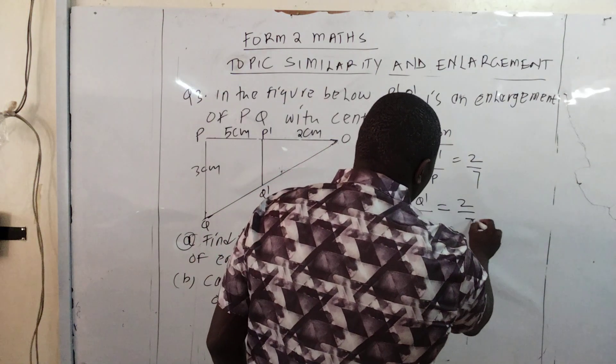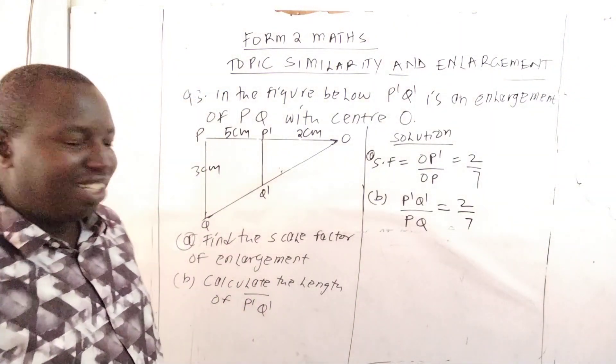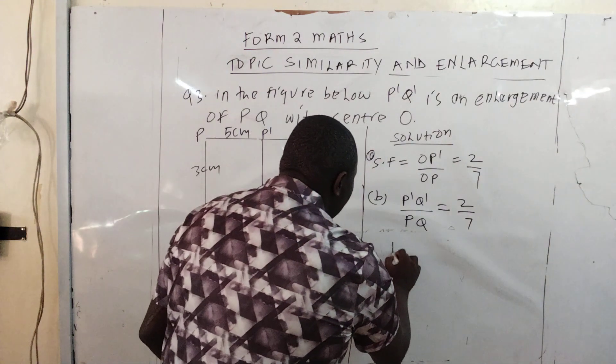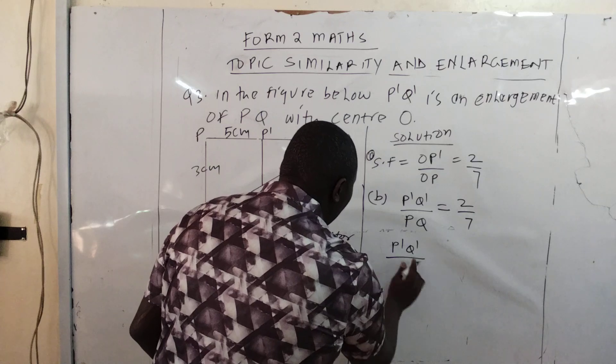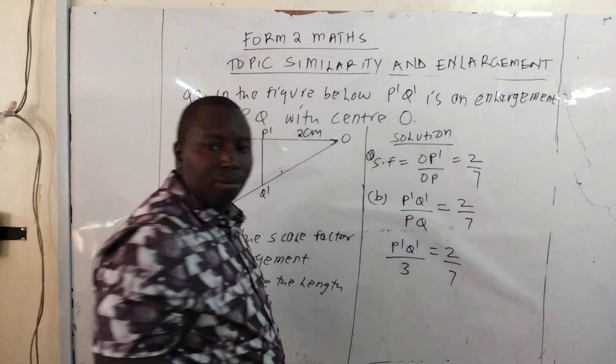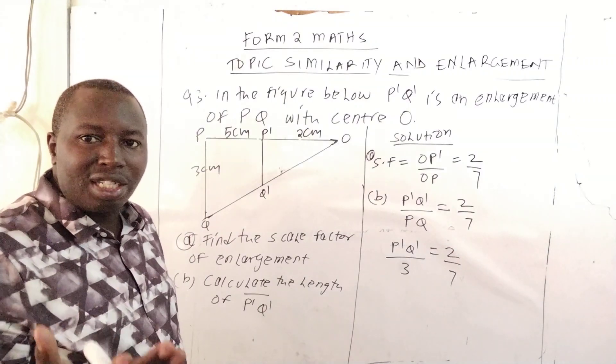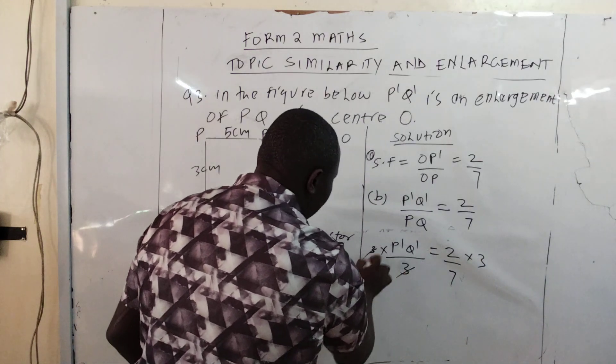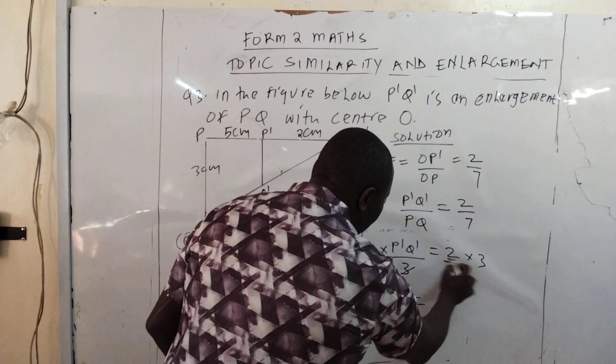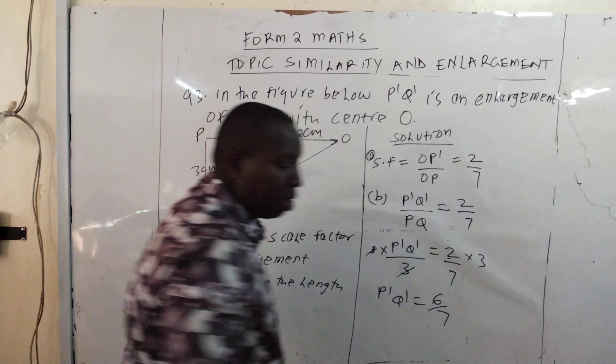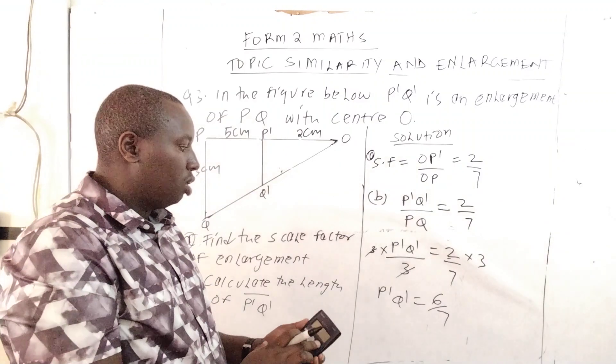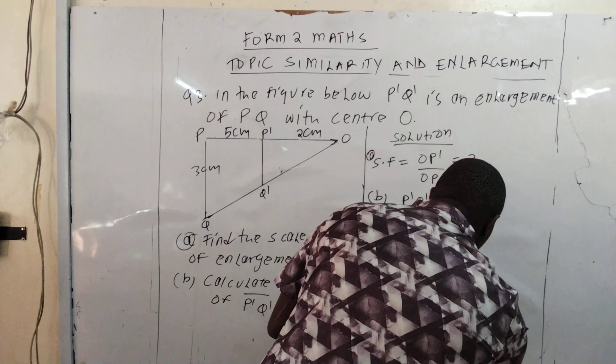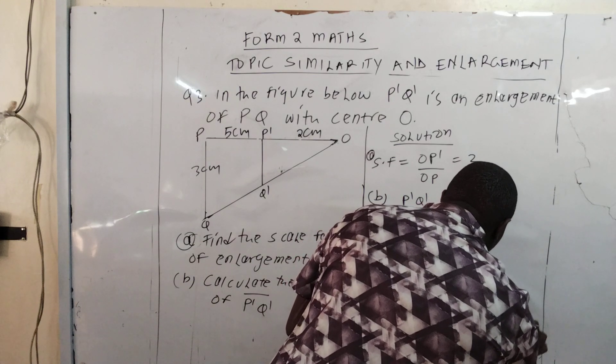You take PQ as 3. Therefore, P1Q1 over 3 equals 2 over 7. So P1Q1 equals 6 divided by 7. Because it is a length, you can't give it as a fraction, so 6 divided by 7 becomes 0.8571 centimeters.